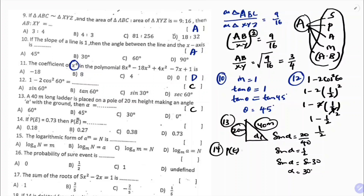Question 14: probability of an event plus probability of the complementary event always equals 1. Here probability of the event is 0.73, so probability of the complementary event = 1 − 0.73 = 0.27. The correct option is B.